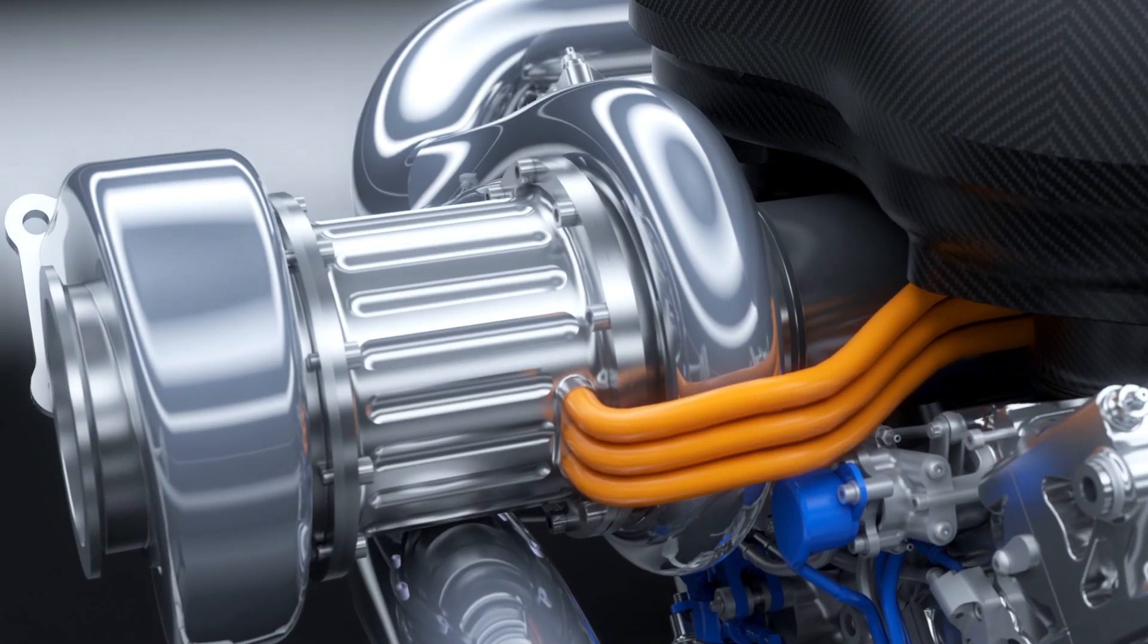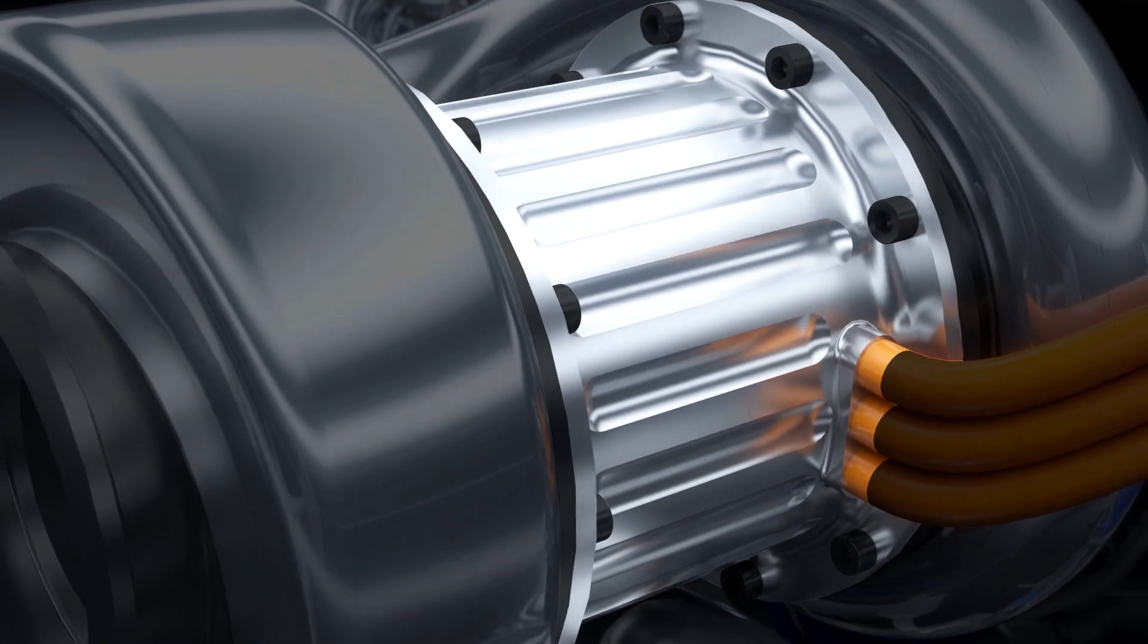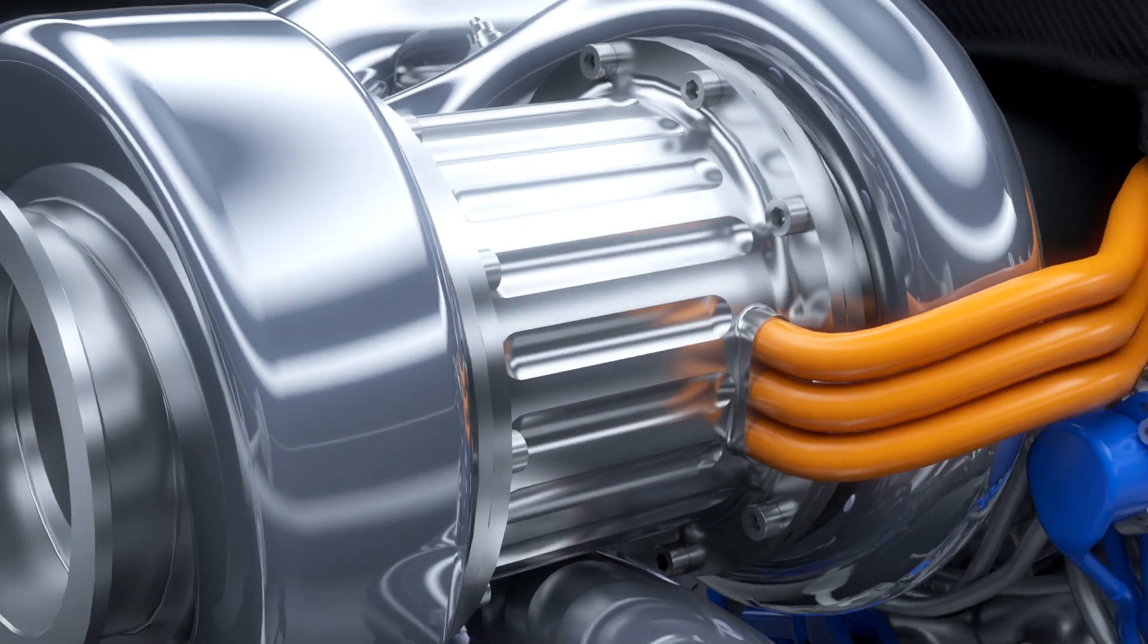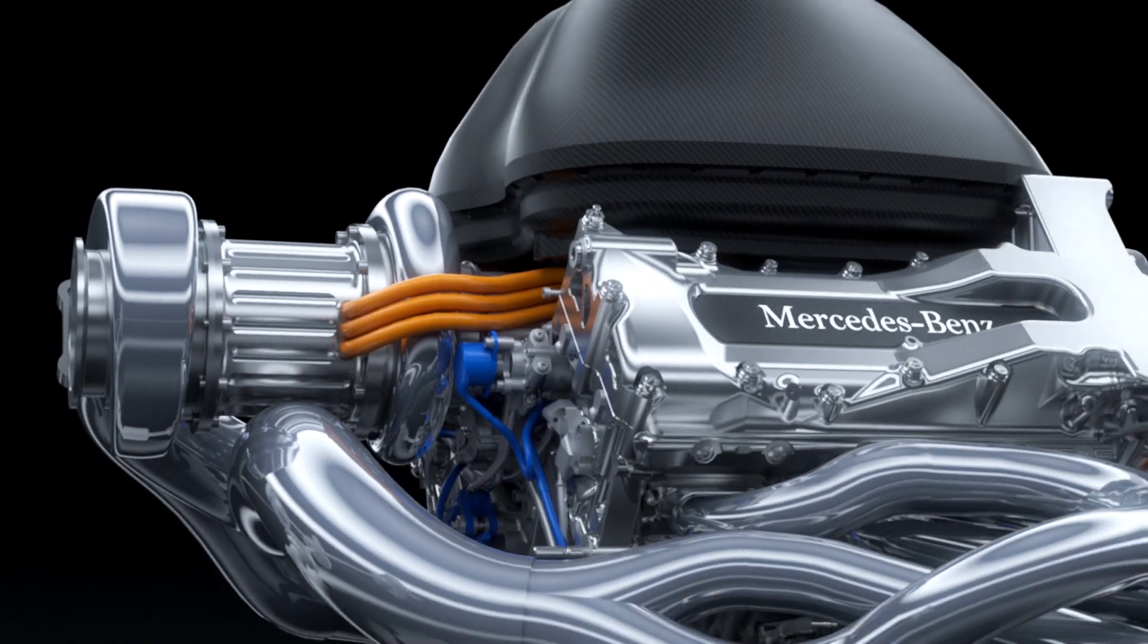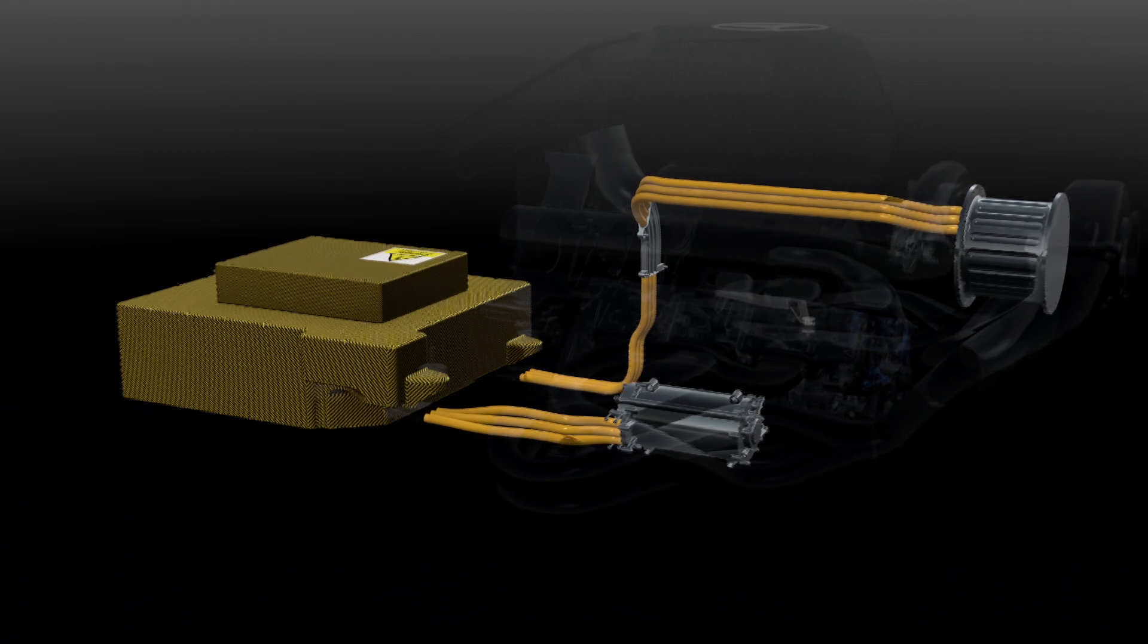The second motor generator unit, the MGU-H, harvests the turbo energy. As a motor, it spins up the compressor to eliminate turbo lag, but it can also send energy directly to the other electric machine and vice versa for maximum efficiency.